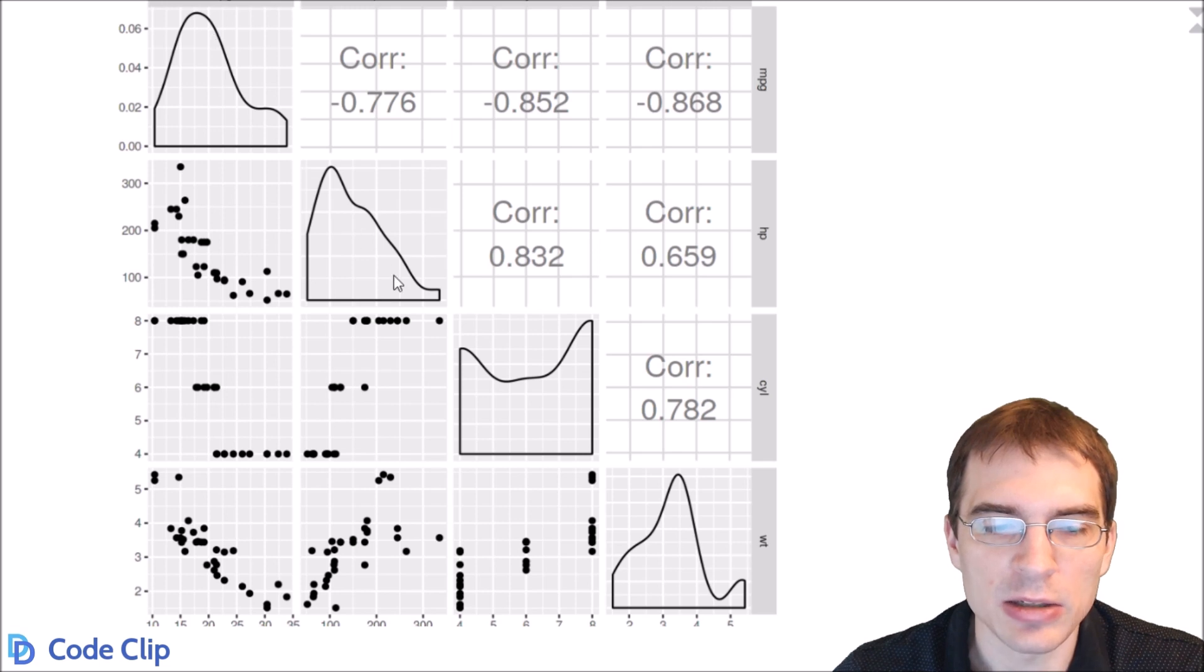But on the diagonal, we actually have density functions for each of the variables. And in the top half of the matrix, instead of just having a duplicated version of this, it actually shows the correlations for each of the variables.